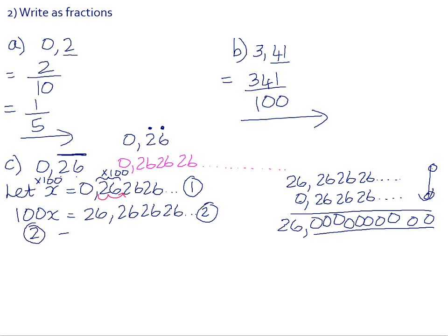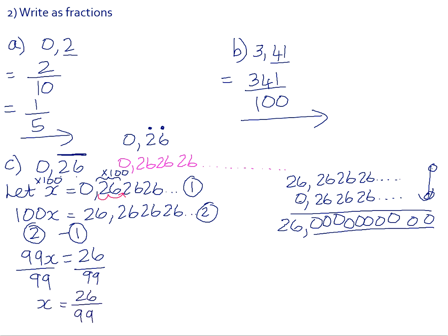Because these are equations, we also subtract the left-hand sides: 100x minus x is 99x. So 99x equals 26. Dividing both sides by 99 gives x equals 26 over 99. Remember, x was defined as our recurring decimal, so we've effectively changed the recurring decimal into a fraction. If you punch 26 over 99 into your calculator, you will get 0.26 recurring.